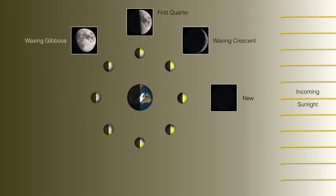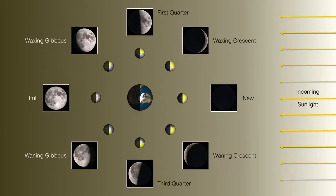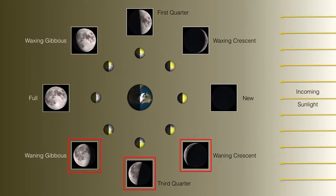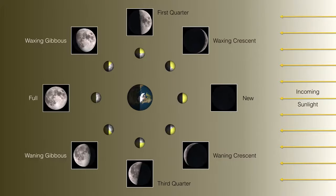Likewise, the appearance of the moon is purely the result of where it happens to be in its orbit with respect to the incoming sunlight. The phases where light is being added to the moon, we call those the waxing phases, whereas when the light is being removed from the moon, we call those the waning phases. So we have waxing crescent through first quarter to waxing gibbous to full, and then we reverse the cycle: gibbous to third quarter to crescent and then back to new again.